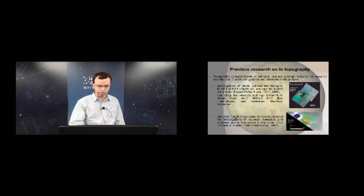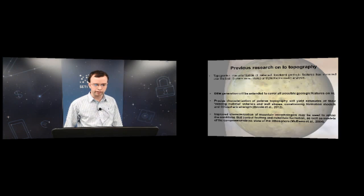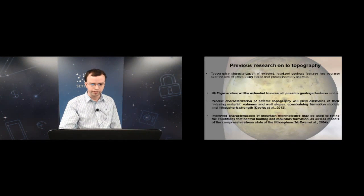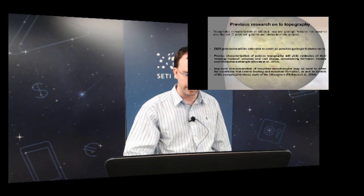Paul Schenk's studies include mountain height measurements — including Euboea Mons, which has one of the biggest landslides seen in the solar system on its north flank. A global DEM will cover all possible geologic features on IO, improving characterisation of Pateri topography such as estimating missing material volumes and wall slopes to gauge lithospheric strength, and refining our understanding of mountain formation conditions and the compressive stress state of the lithosphere.